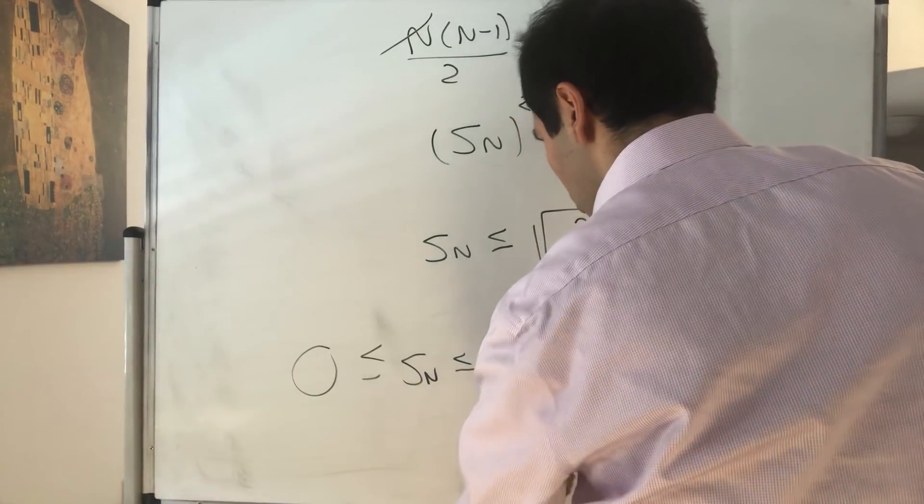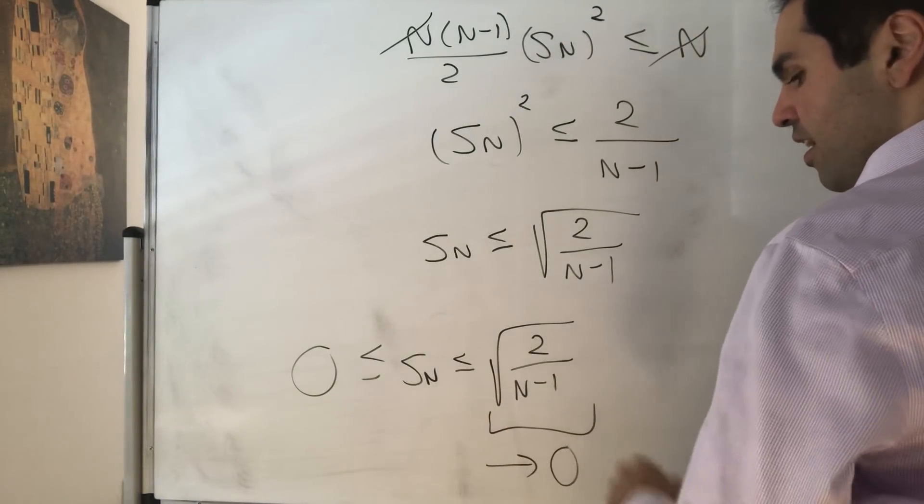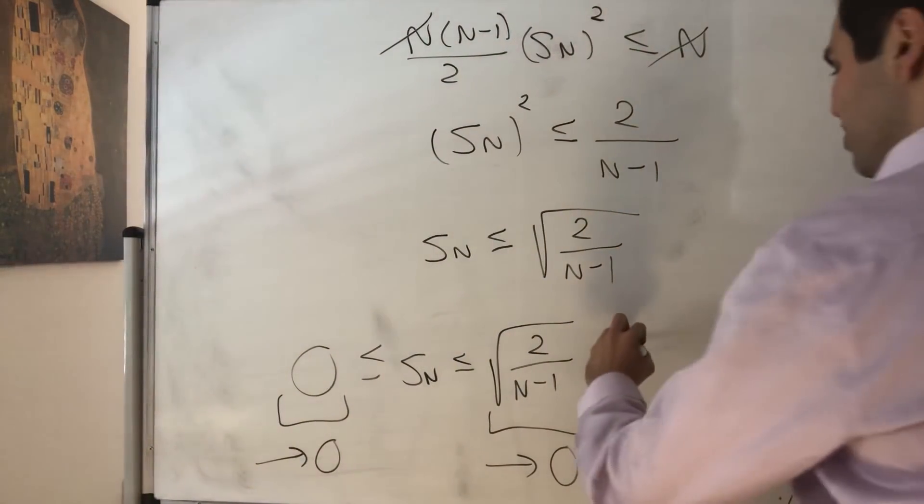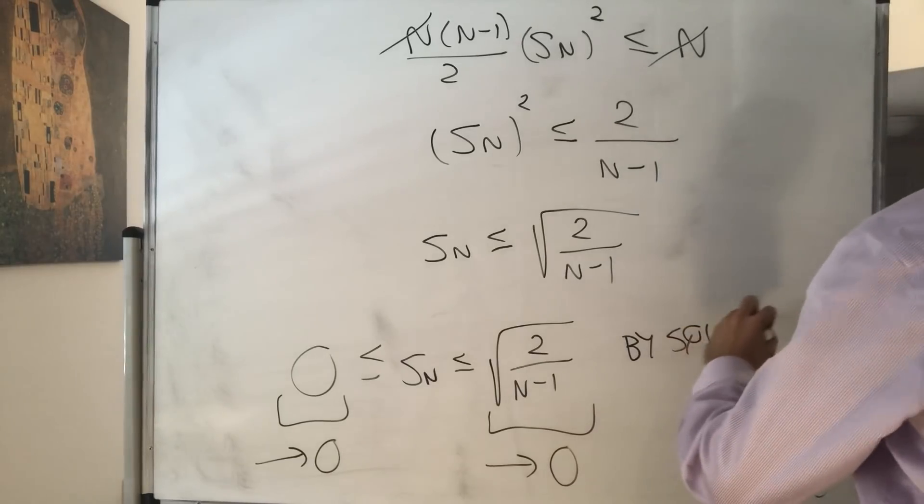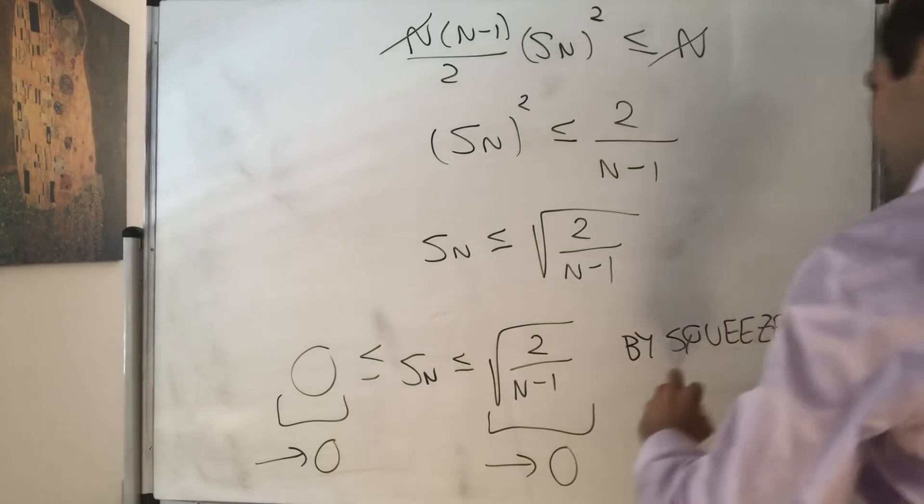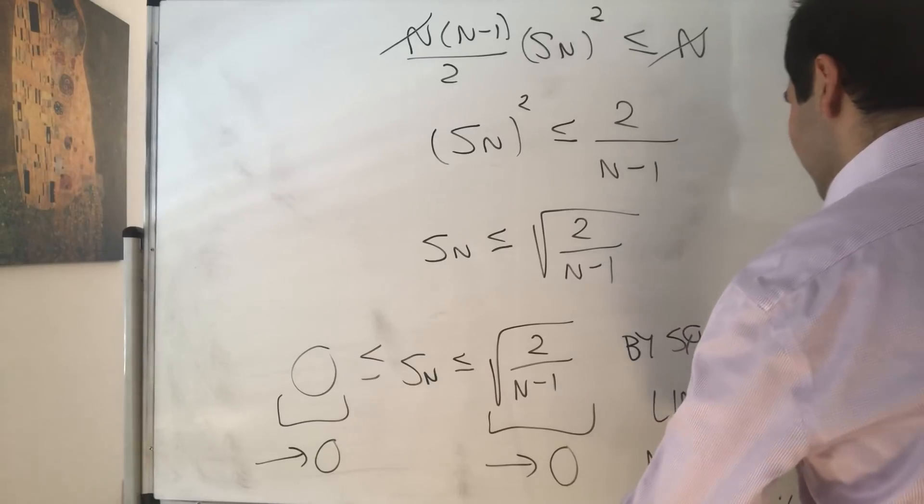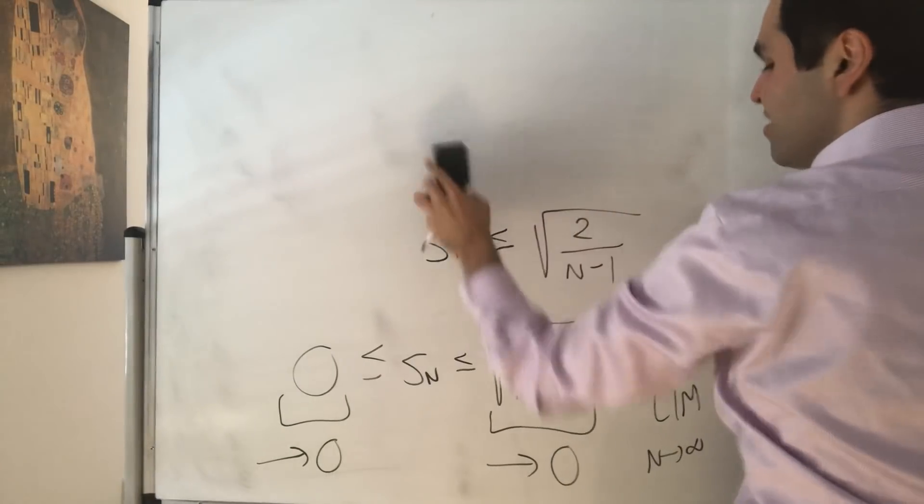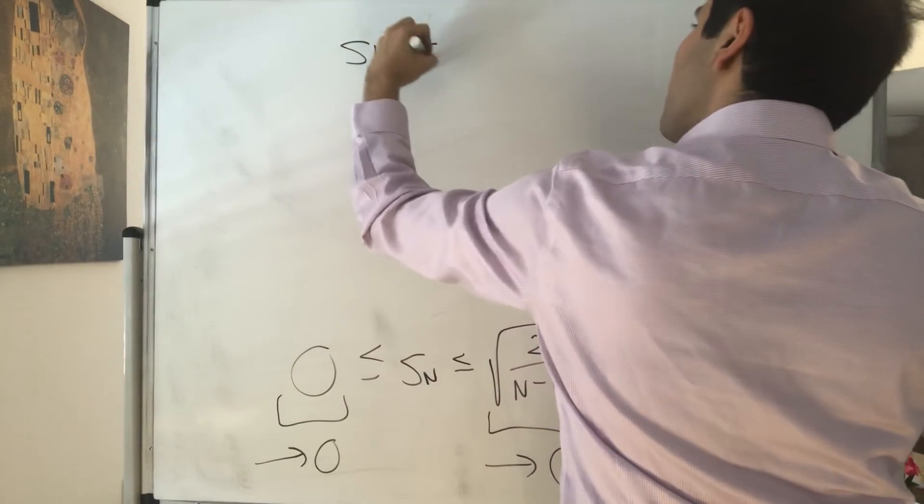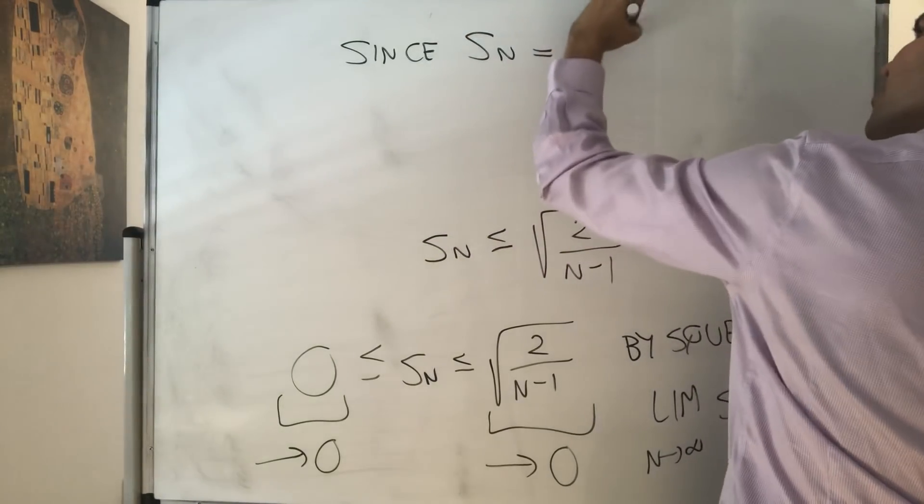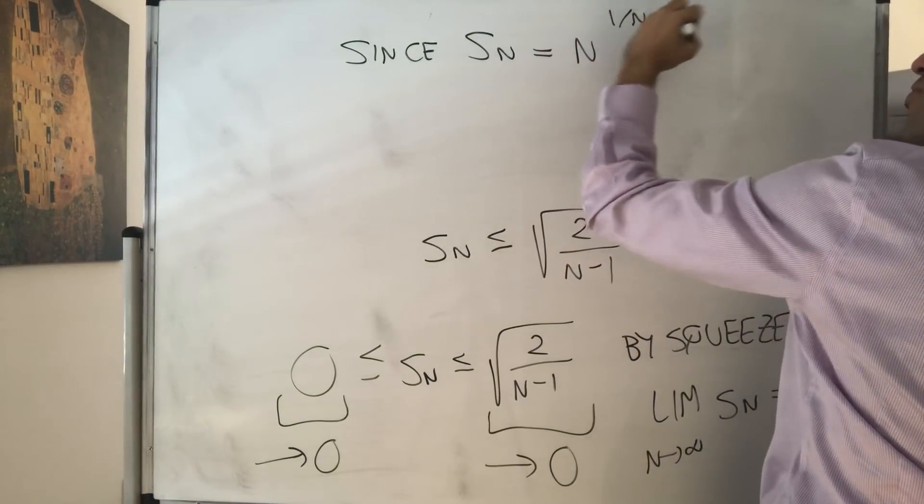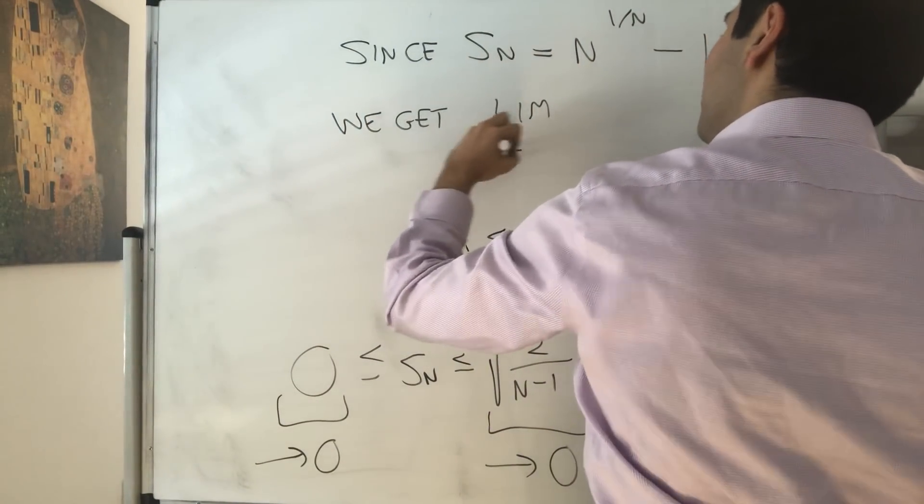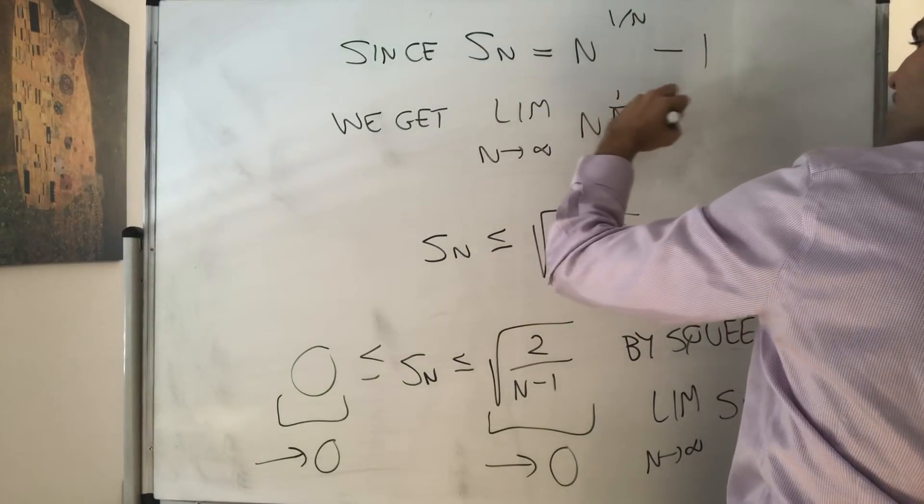With this you can just show that it goes to 0 by a standard limiting argument. This, I hope you believe, also goes to 0. So by the squeeze theorem we get the limit as n goes to infinity of S_n equals 0. And if you remember what S_n is, but since S_n equals just the difference n to the 1 over n minus 1, we get that the limit as n goes to infinity of n to the 1 over n equals 1.